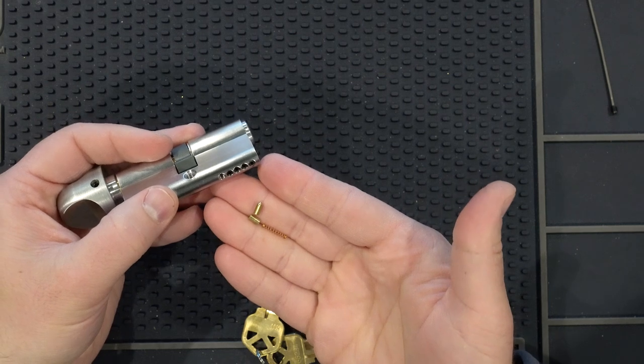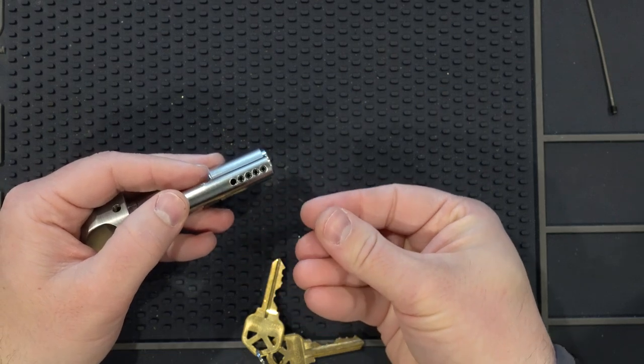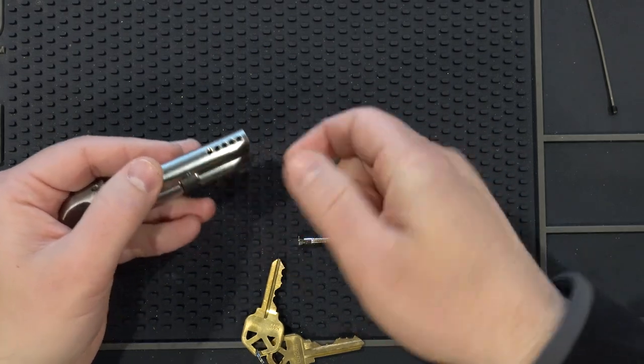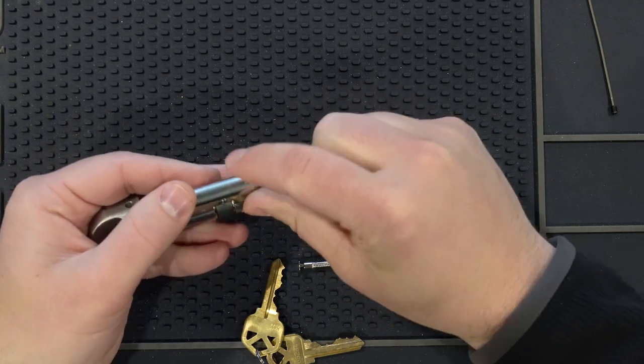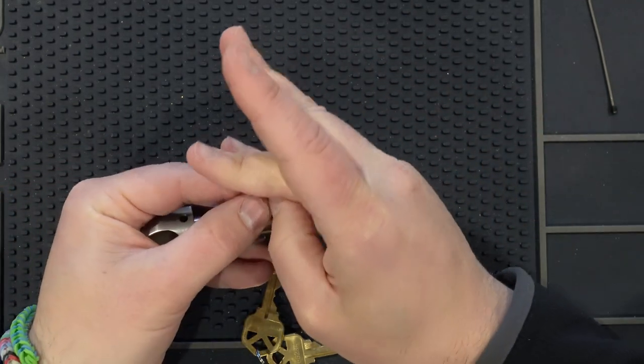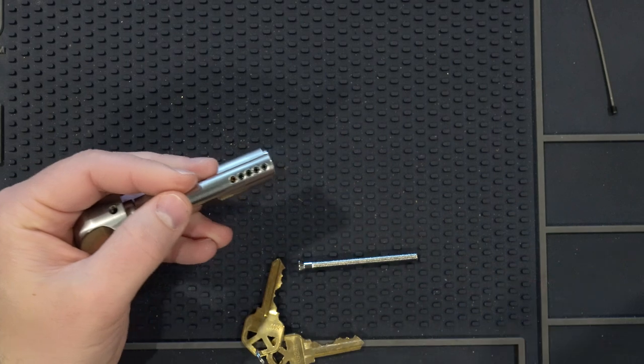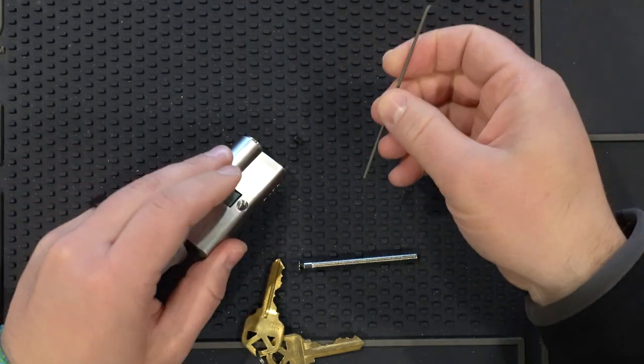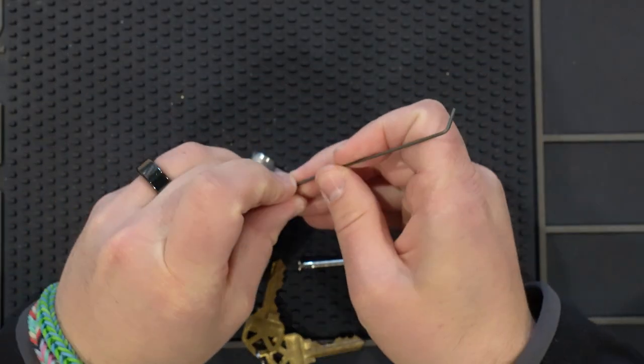In order to rekey these, you need to take all the allens out, take all the springs, all the top pins, all the bottom pins and master pins depending on what you're doing. When you have it all out and you have your new key, you're going to pin it up like you normally would, then add in the top pins and springs. A good thing to check is once you have it pinned up, before you put the allens in, try it and make sure everything works. Once you have all five chambers done, you're going to put the allen screw back in and you're done.